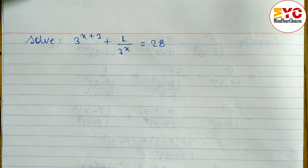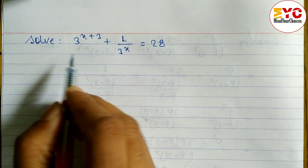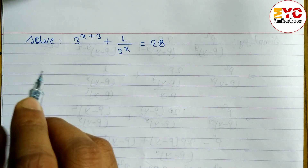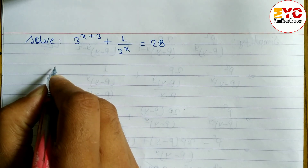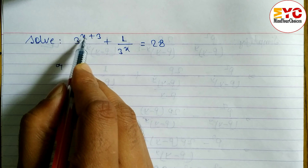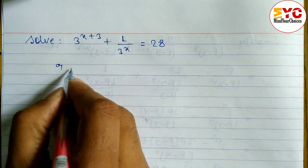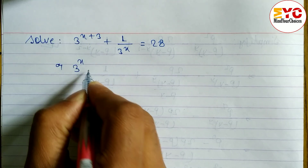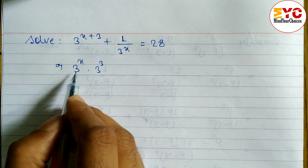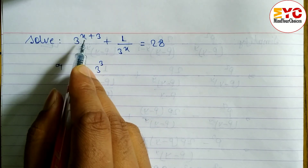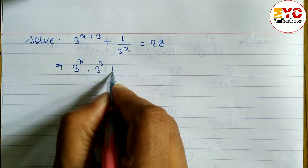This question is taken from SE modal question, so we have to solve here — solve means we have to find out the value of x. Let's take a start. We can see here 3 power x plus 3, so we have to separate this one. We can write 3 power x into 3 power 3. We know that when the base is the same and we multiply, we have to add the powers.